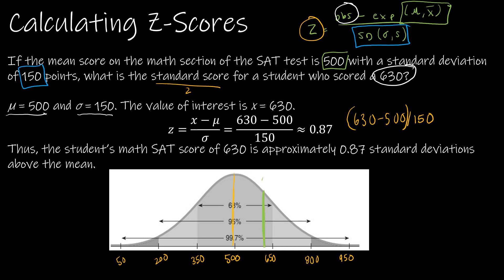That score of 630 is somewhere over here on the distribution. A z-score standardizes it so that a z-score of 0 is in the middle — the mean — and a z-score of 1 corresponds to a raw score of 650, which is one standard deviation above the mean. Then two standard deviations, three standard deviations, negative one, negative two, negative three. Our result of 0.87 falls between zero and one, meaning it's 0.87 standard deviations above the mean.